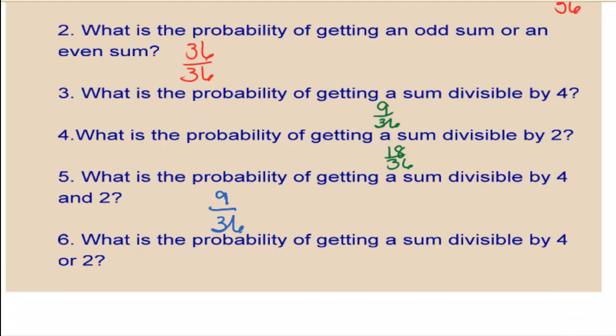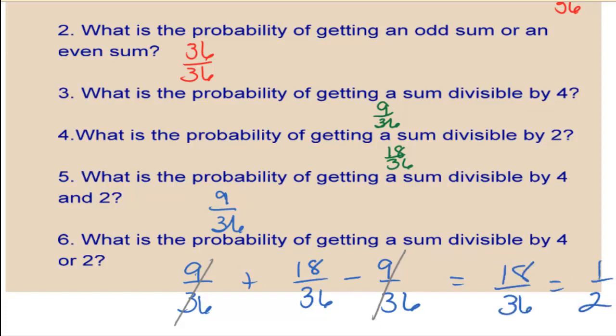So what is the probability of getting a sum divisible by 4 or 2? We want the probability of getting a sum divisible by 4, which is 9 out of 36, plus 2, which is half of them or 18, minus the and, which is number 5, 9 out of 36. So basically, we probably already figured this out. These two will cancel each other, and the answer is 18 out of 36, which is the evens.